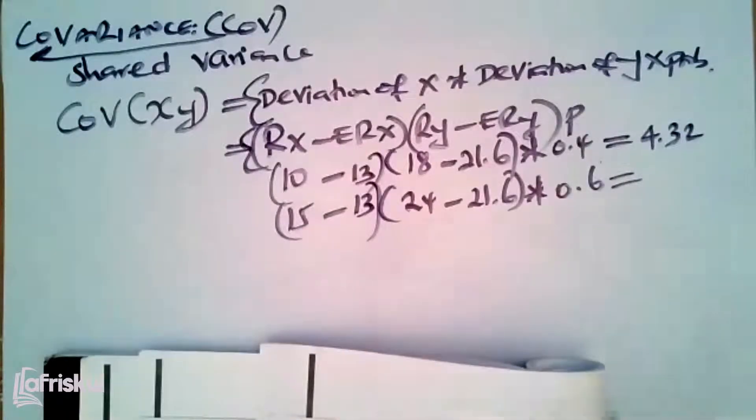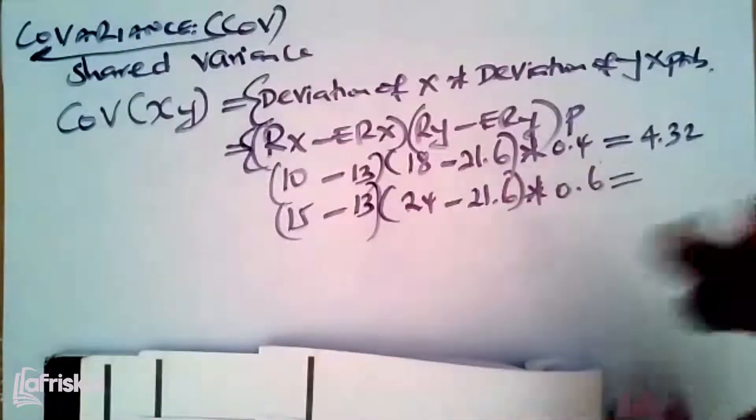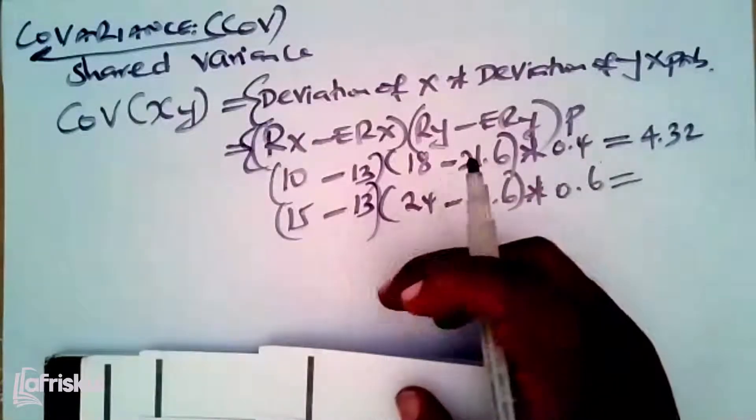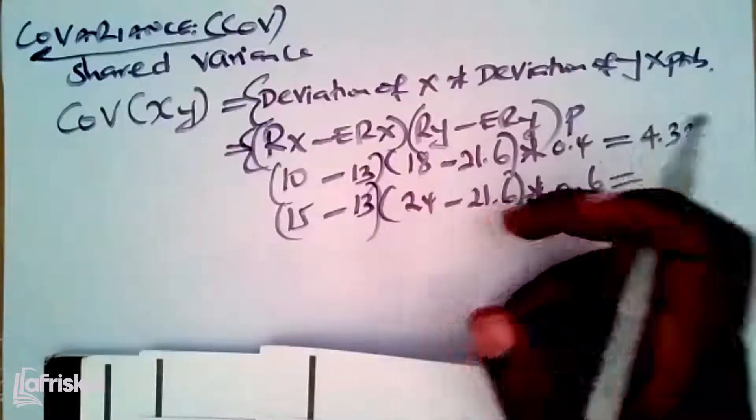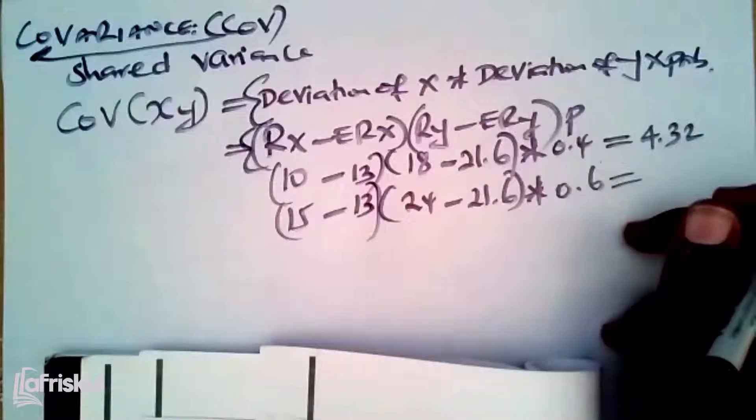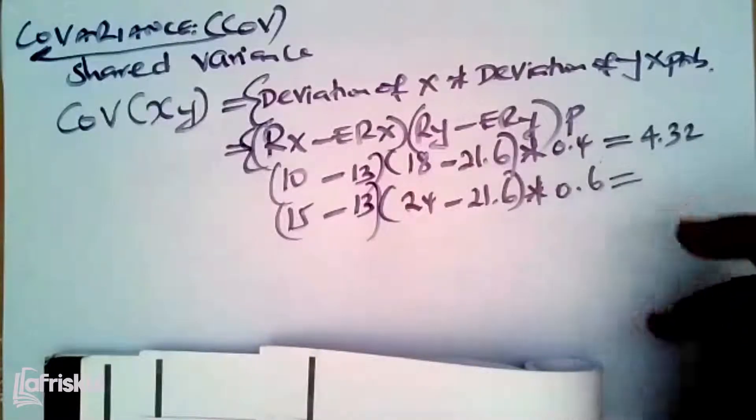How about the second scenario? Just know how to use your calculator nicely. You simply press there, open brackets, 15 minus 13, close, times open 24 minus 21.6, close, times 0.6. Give me a figure. 2.88? 2.88 is correct.